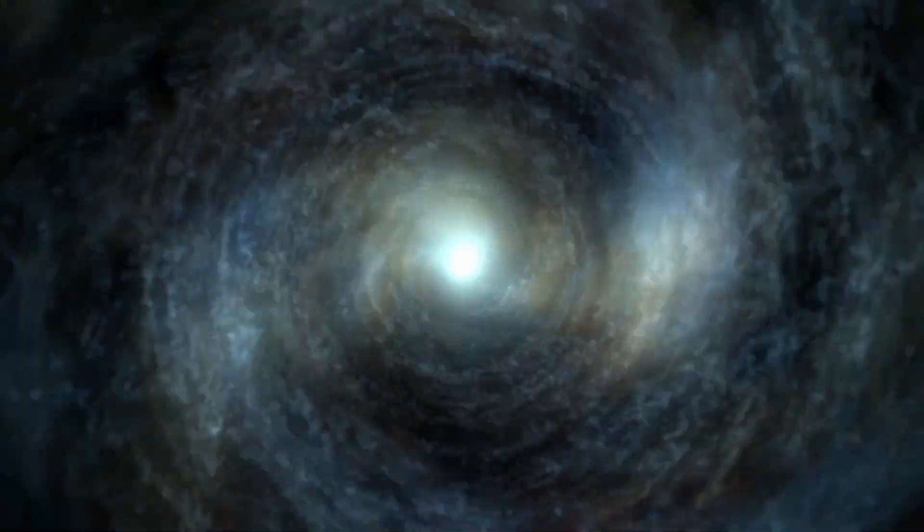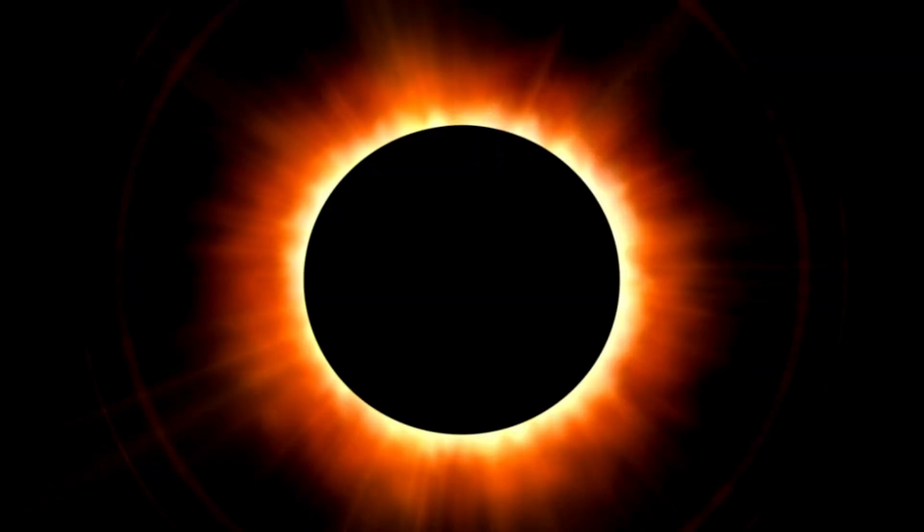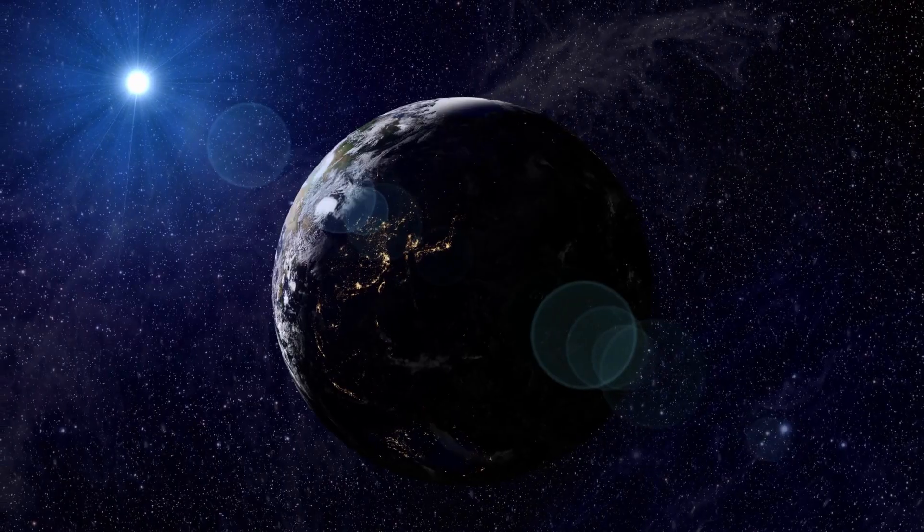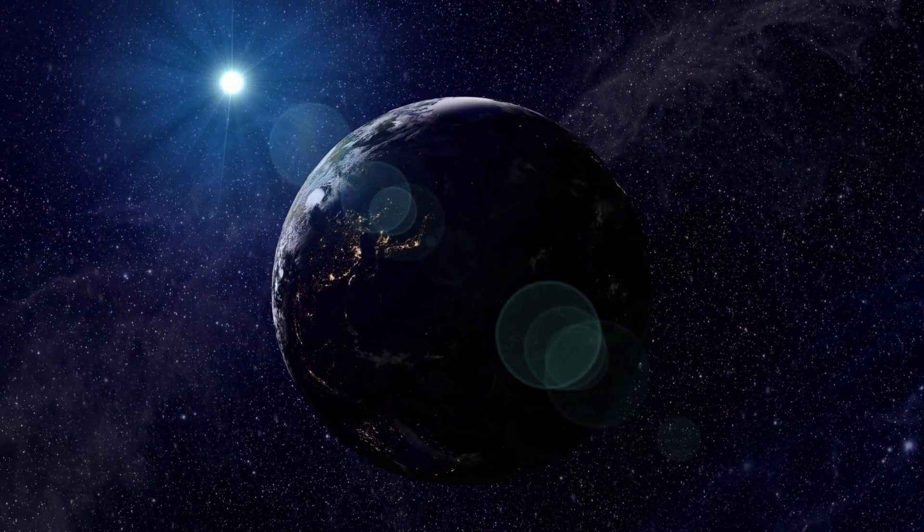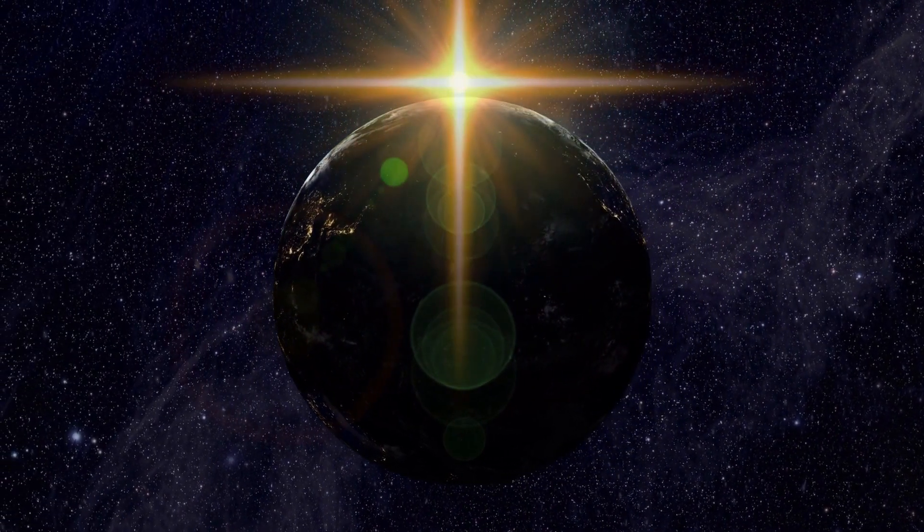For a black hole with the mass of our sun, this horizon is just two miles wide. That's like the distance of a short jog. And here's a fun fact. If our sun magically turned into a black hole today, Earth would just keep spinning in its orbit, none the wiser. Well, except for the whole eternal darkness and cold thing.